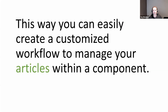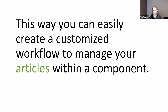This way you can easily customise the workflow to suit how you want the articles to work. Just a little bit of terminology: when I'm talking about states or stages, I'm talking about published, unpublished, trashed, archive, that sort of state. And when I'm talking about transitions, that's how we move from one state to another — how we go from unpublished to published or from published to trash.